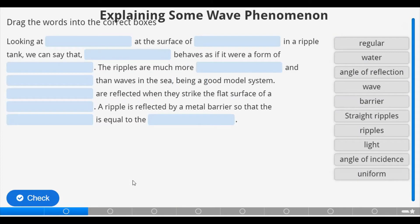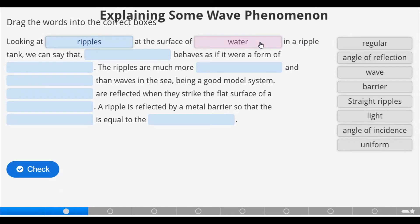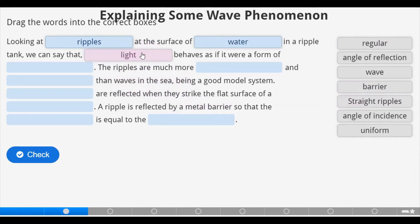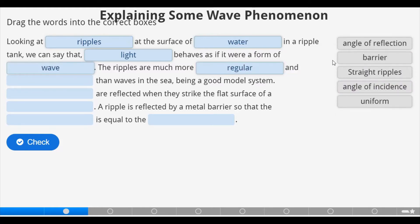We have to first and foremost drag the following words into the correct boxes to be able to say something about some characteristics of waves. Let's start. Looking at ripples at the surface of water in a ripple tank, we can say that light behaves as if it were a form of wave.